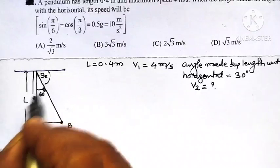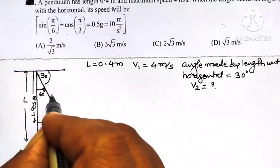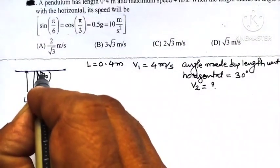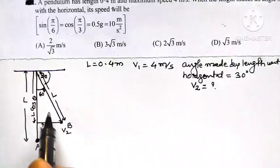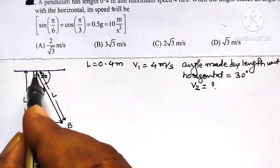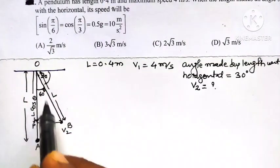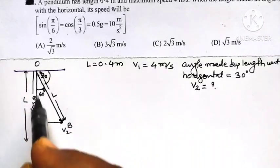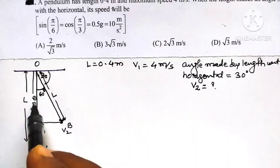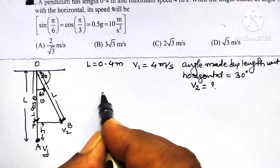As far as length of pendulum is concerned, this is length L. We can resolve this L into two components. One of the components, when L is resolved, that component which makes an angle theta is L cos theta.